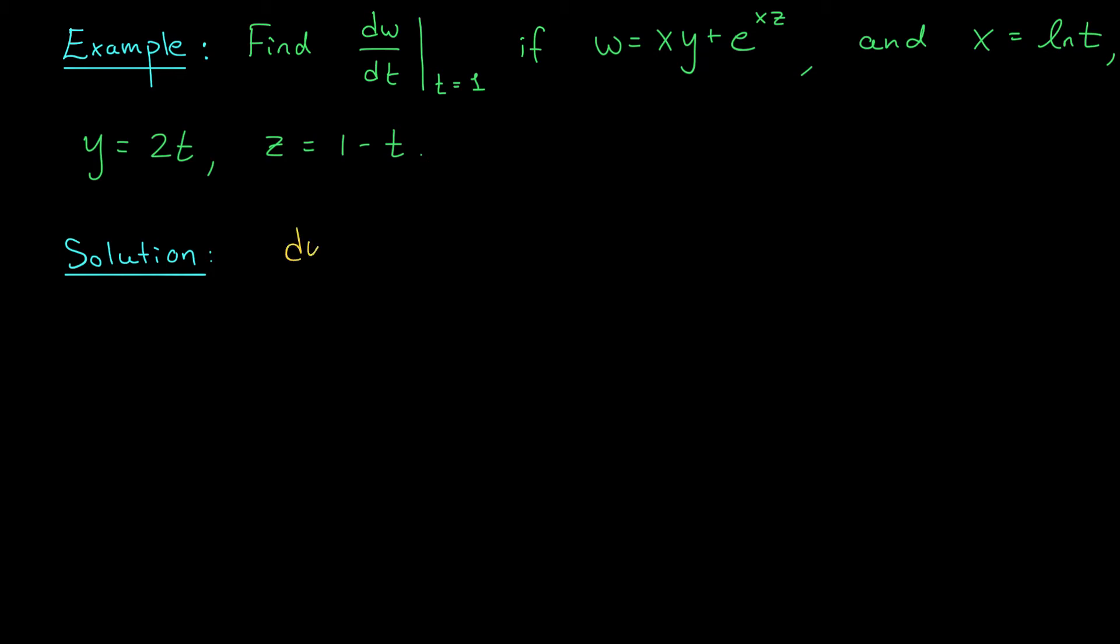So in this case, dw by dt is partial w by partial x dx by dt plus partial w by partial y dy by dt plus partial w by partial z dz by dt.